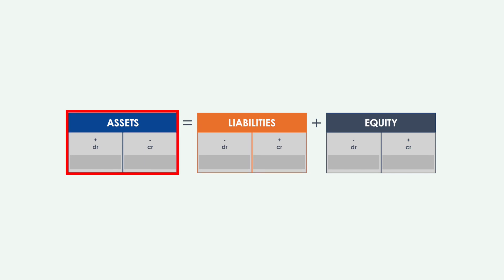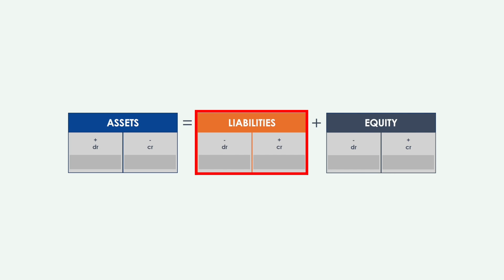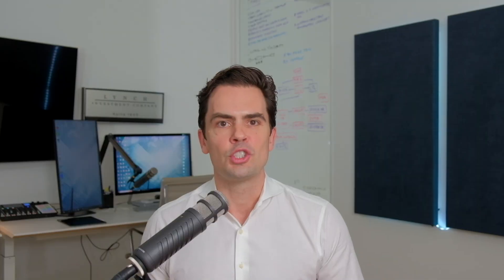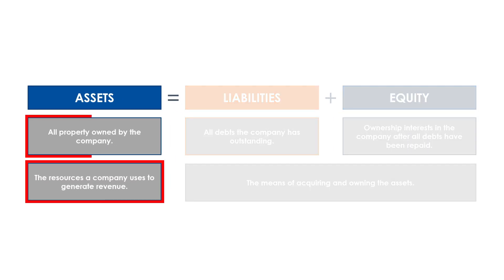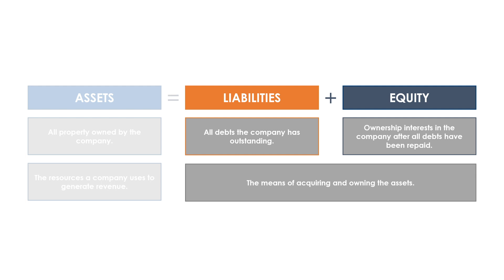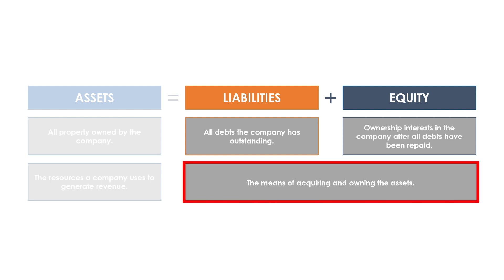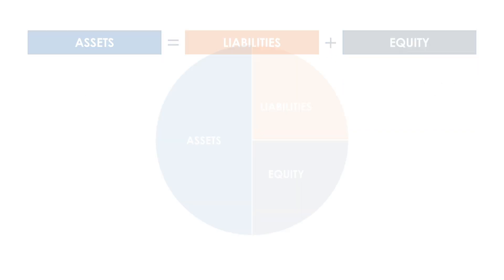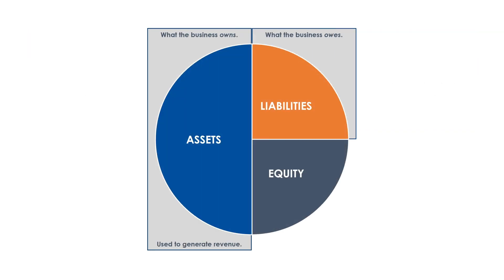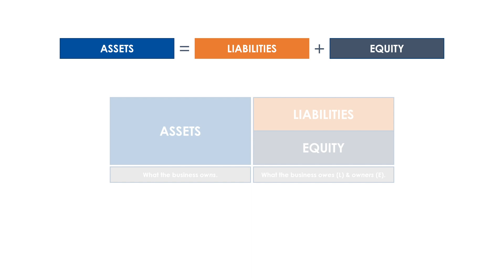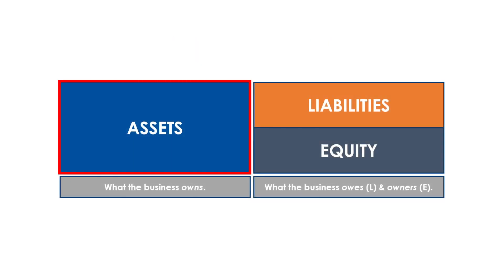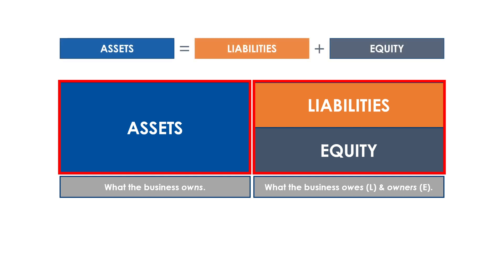The accounting equation states that the value of a company's assets is equal to the sum of the company's liabilities and stockholders' equity. Stated more plainly, a company uses assets to generate revenue — this is everything that the company owns. Liabilities and equity represent the means of acquiring and owning the assets. So on the left-hand side of the equation, assets, you have everything the business owns. And on the right-hand side, you have everything the company owes and its owners. Repositioning the colored rectangles such that the assets rectangle is the size of both the liabilities and equity rectangles can help visual learners with the relationship between all three.